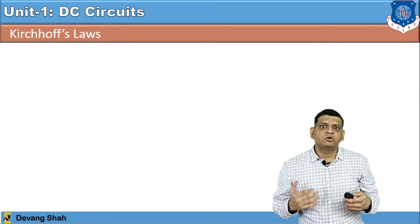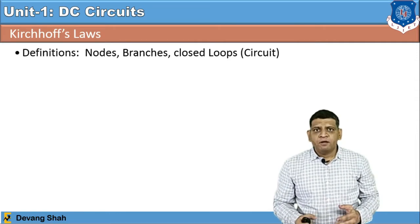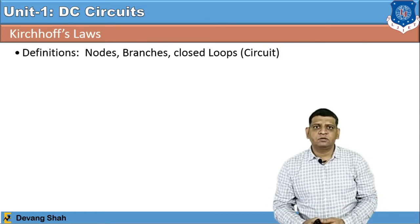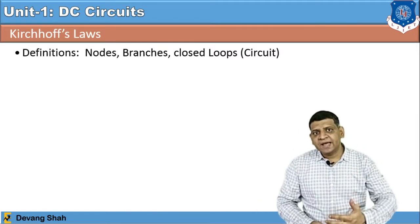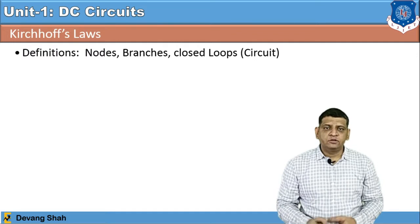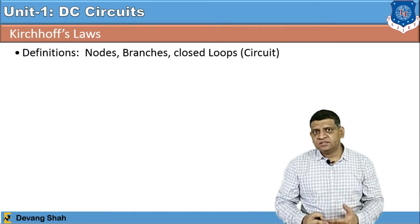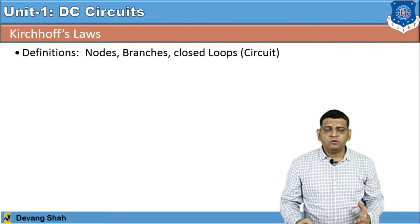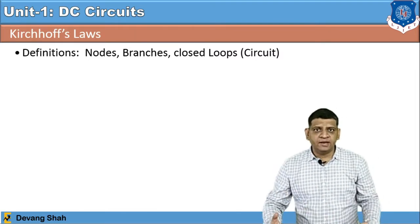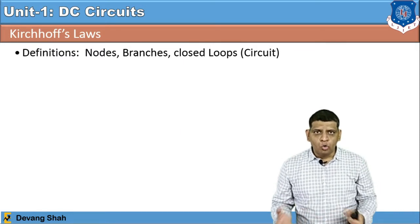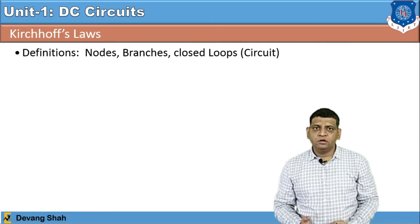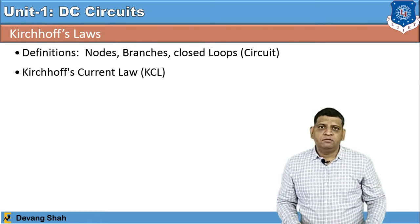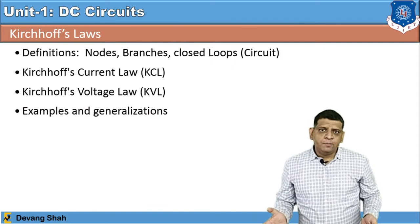So let's start with Kirchhoff's laws. First we need to understand the components of circuit design — why we are learning all these topics — because the goal is to design an electrical circuit for a desired output. For that we learned three basic components: resistance, inductor, and capacitor. Now we will cover the importance of resistance, understand the terminology of circuit design — specifically nodes, branches, and circuits — and then learn about Kirchhoff's current law, Kirchhoff's voltage law, and examples.